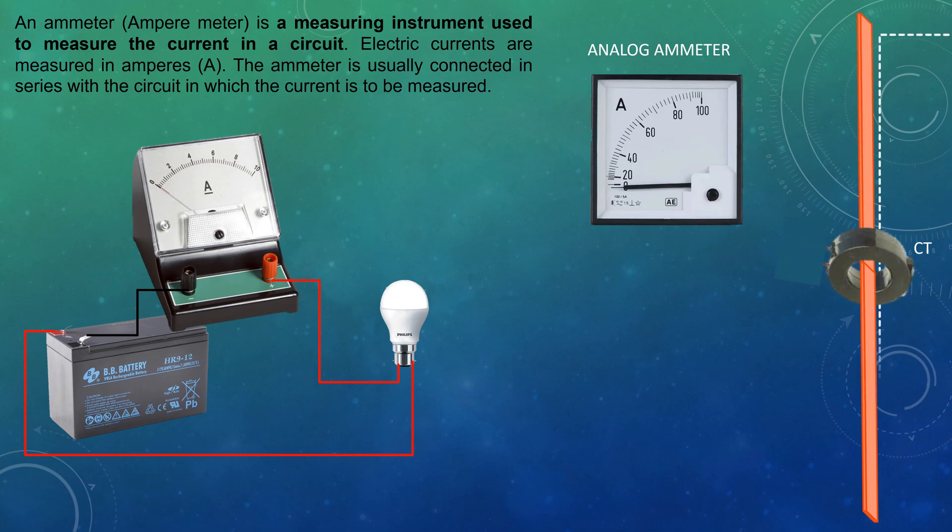The current transformer steps down high current to a suitable measurable current, and handling of such current is also easy.